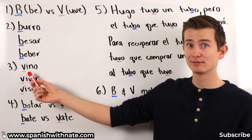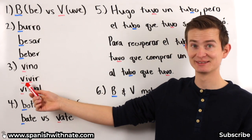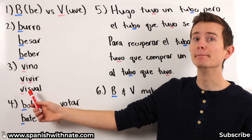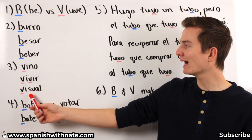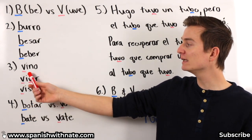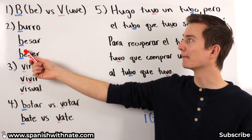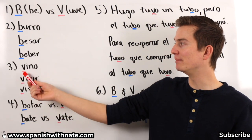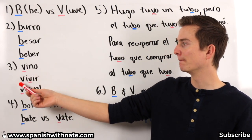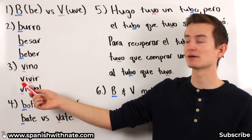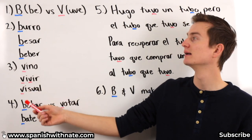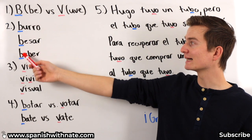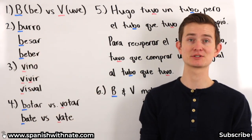It's not 'vino' with an English V sound. It's not 'vivir' or 'visual' with a V. No — it's B, B, B. Visual, vivir, vino, beber, besar, burro — you could interchange these. I could put a B in front of the V words and it would make the same sound. Vino, vivir, visual. Same thing — I could put Vs in front of burro, besar, beber. It would make the same sounds.